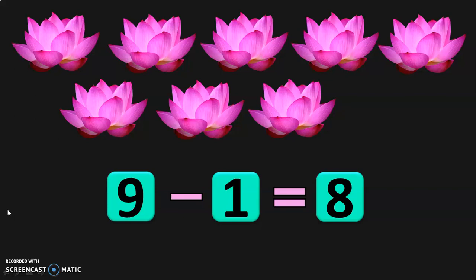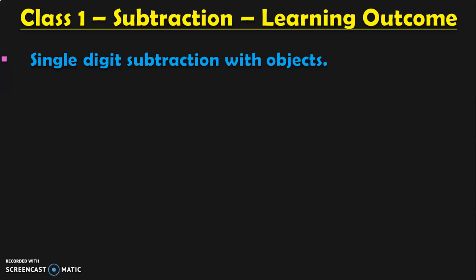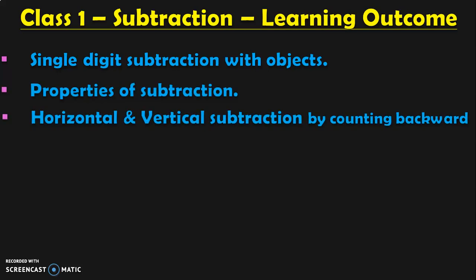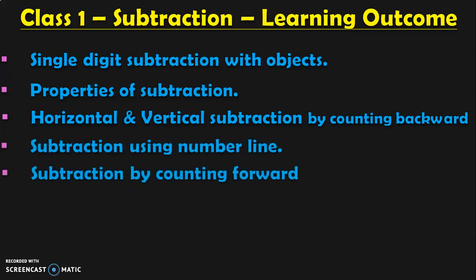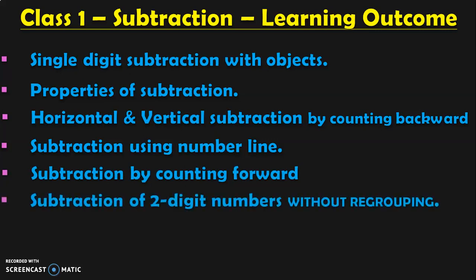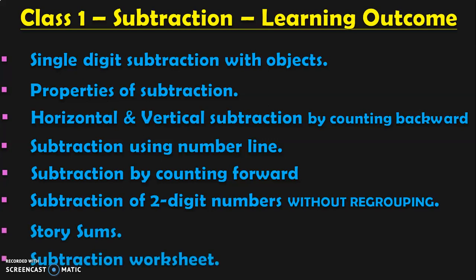Dear viewers, all these properties will be very useful and handy when children start doing calculation of bigger numbers. The learning outcomes in class 1 with respect to subtraction are: single digit subtraction with objects, properties of subtraction, horizontal and vertical subtraction by counting backward, subtraction using number line, subtraction by counting forward, subtraction of two digit numbers without regrouping, story sums, and subtraction worksheet.